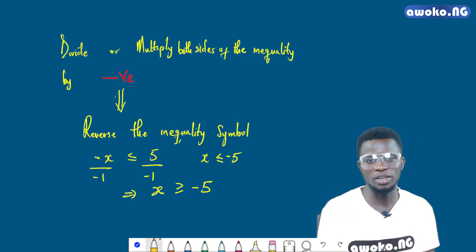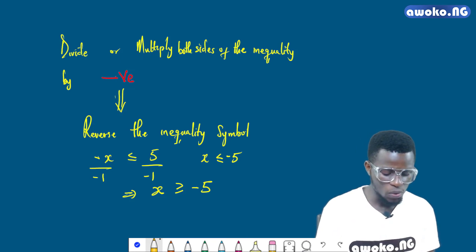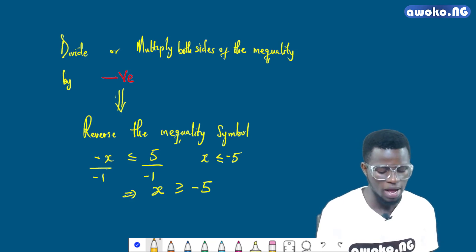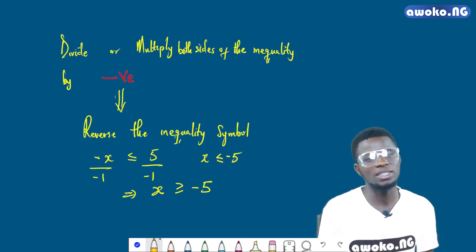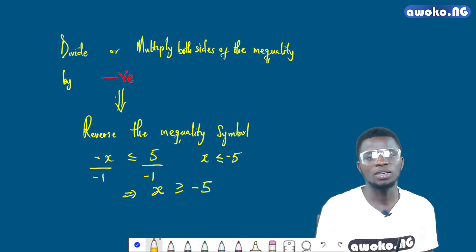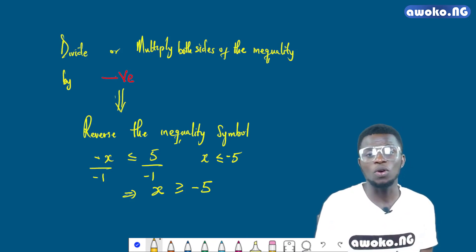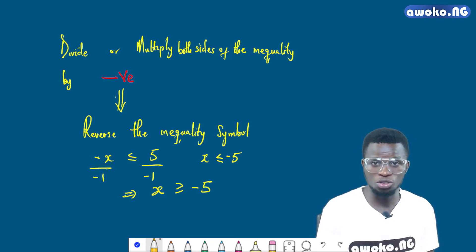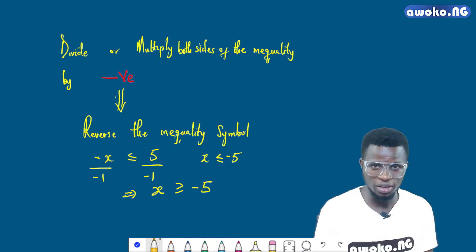Because initially, if minus x is less than or equal to 5, then it shows that x will be greater than or equal to minus 5 — it is logically correct. So when we are to divide or multiply both sides of the inequality by a negative number, we will have to reverse the inequality symbol, just as I have illustrated here.